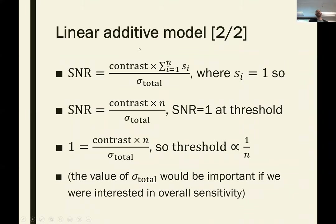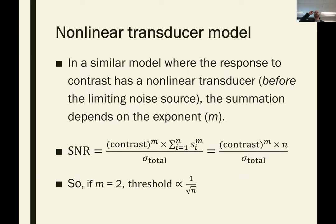You can have a similar model where instead of a linear response to contrast, you have a nonlinear response — a transducer — importantly placed before the limiting noise source. In this case, summation just depends on the exponent of that transducer. With contrast raised to the power M, if M equals two, which we very often think it is, threshold is proportional to one over the square root of N. You can get the same one-over-square-root-of-N outcome if instead participants use a template — they ignore irrelevant regions and only accumulate noise within the bounds of the stimulus. The template grows as the stimulus grows and they know which mechanisms to monitor each time. Because noise then grows in proportion to the square root of the area, threshold is again proportional to one over the square root of N.